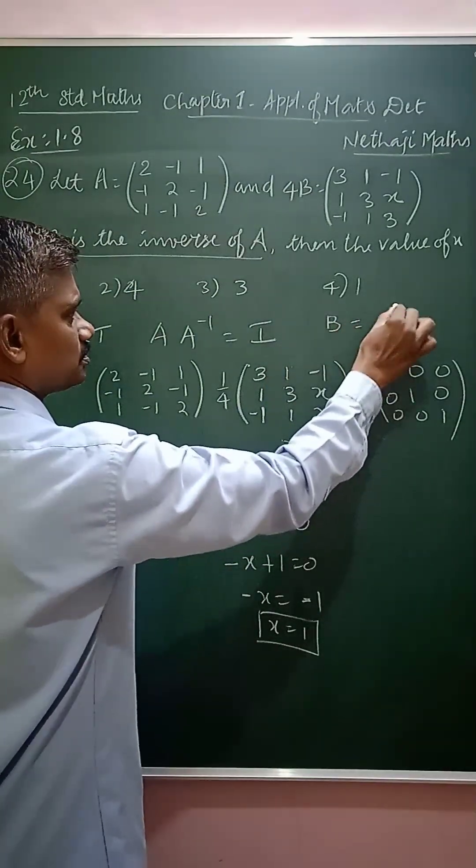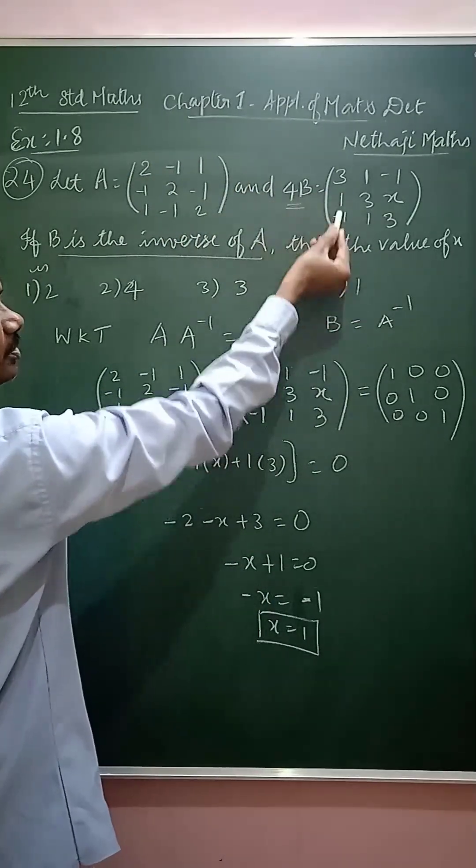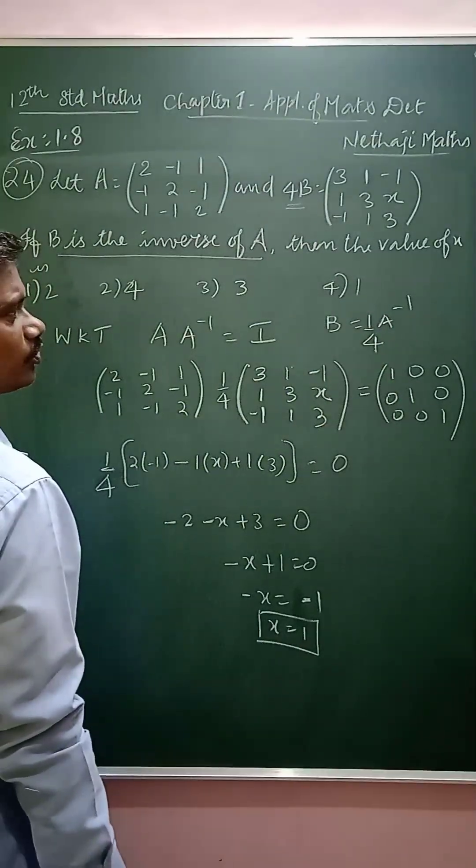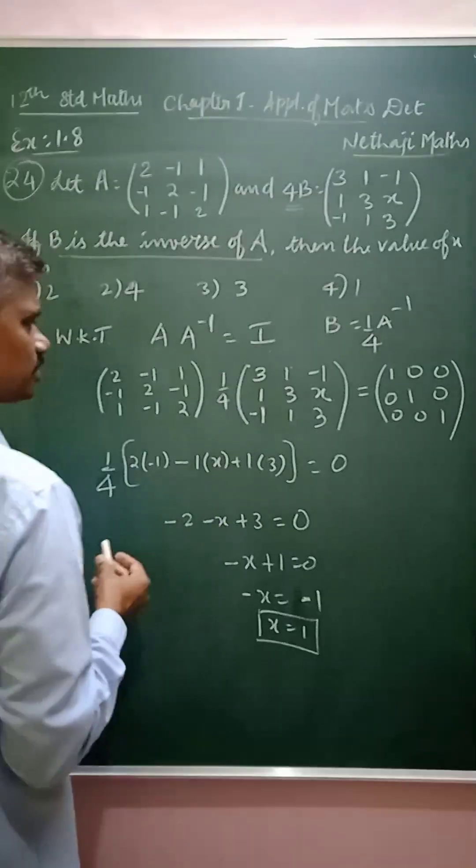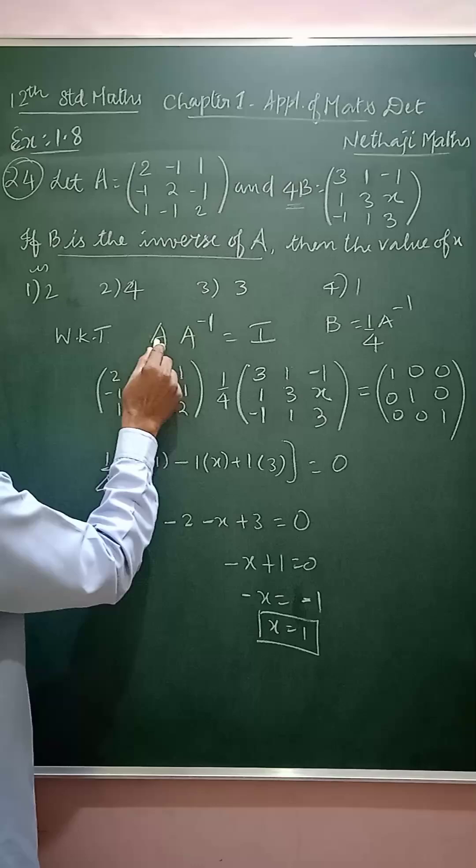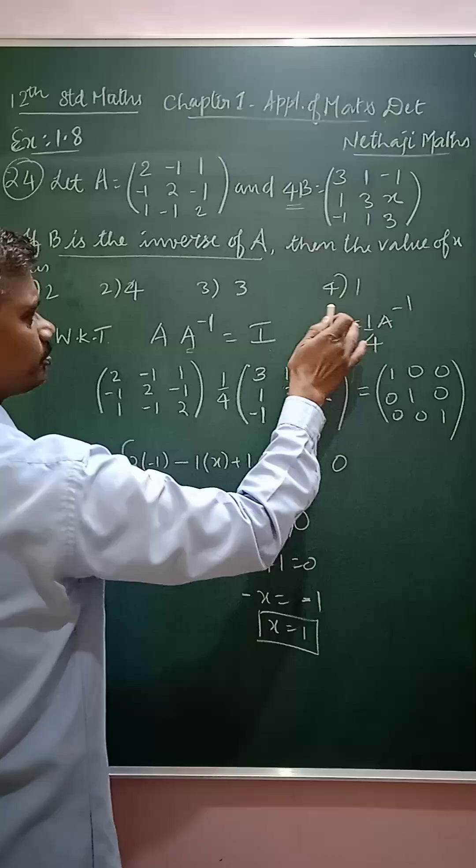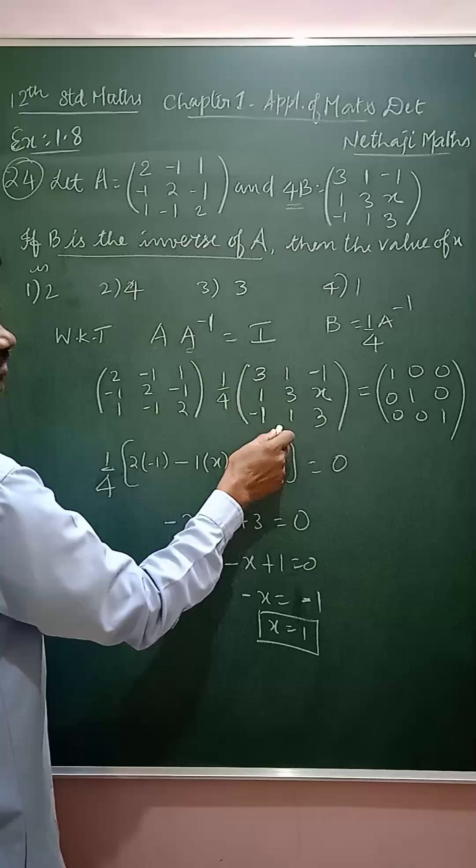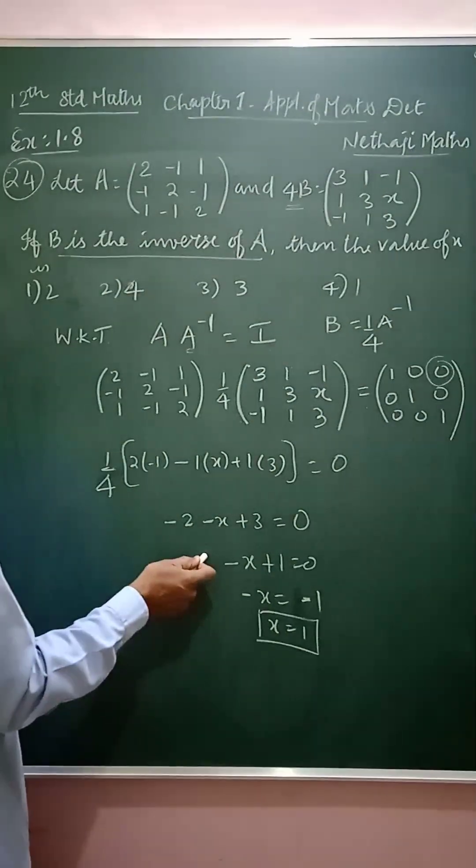So here the condition given is B is the inverse of A. B is given as 1 by 4 times A inverse. So we have the property that A times A inverse equals I, the identity matrix. So I am going to use this concept. A times A inverse, substitute A inverse as 1 by 4 times B.